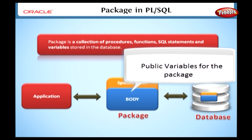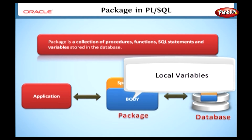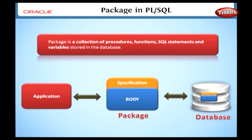In the specification section, we can declare the public variables for the package. These variables are visible to all the applications which are referencing this package. We can also declare the local variables in the body section. These variables are visible only to the package — external applications referencing this package can't access these local variables. Unlike procedure and function, we can't call packages directly. Packages can't be nested and packages will not accept any input parameters.